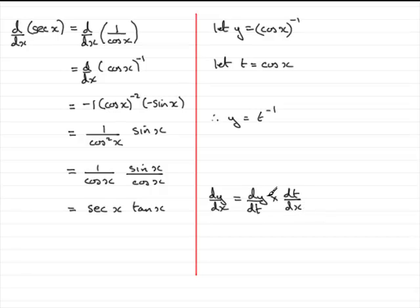So we've got to work out dy by dt. Now y equals t to the minus 1. So therefore dy by dt would equal minus 1 times t to the power minus 2. And what is this? Well we know that t stands for cos x. So we've got minus cos x all to the power minus 2.